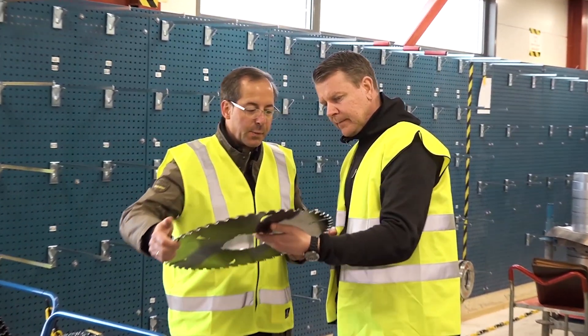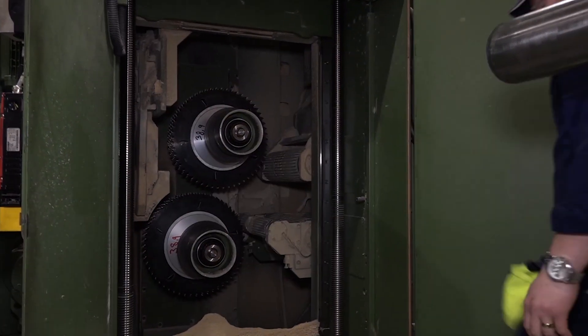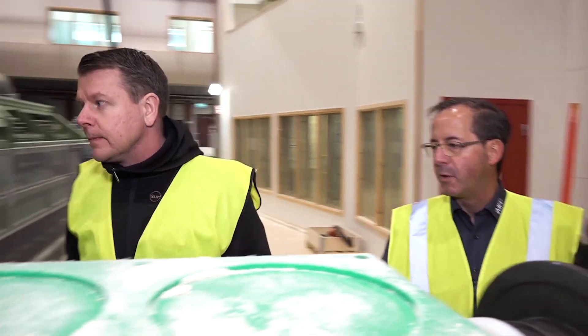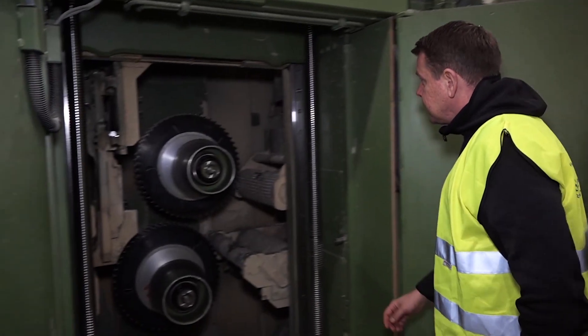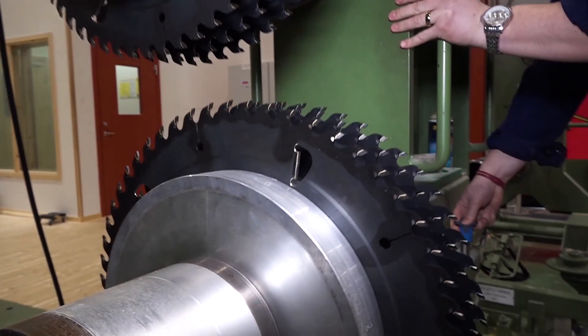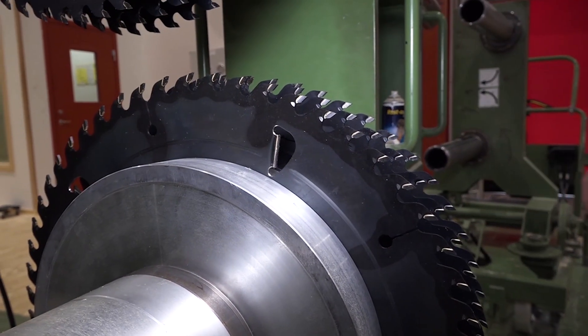The entire plant is now switched off to change the tools. Downtimes must be kept as short as possible, as every minute costs several thousand euros. To ensure that the tools can be changed quickly, the circular saw blades are brought to the line already preassembled.